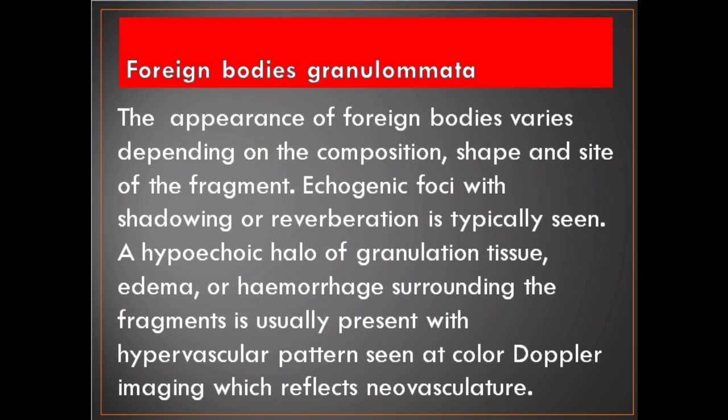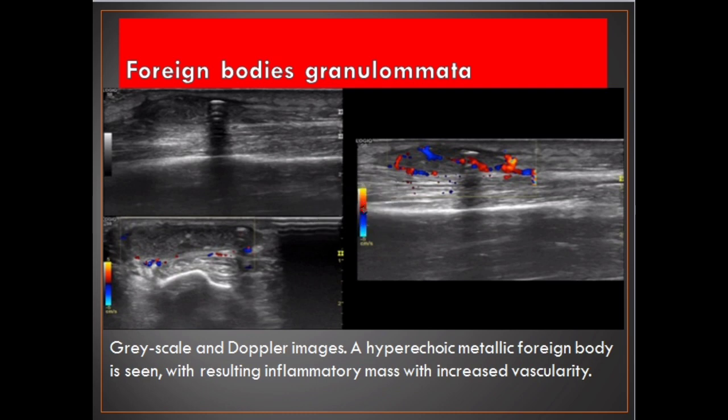The appearance of foreign bodies varies depending on the composition, shape, and site of the fragment. Echogenic foci with shadowing or reverberation is typically seen. A hypoechoic halo of granulation tissue, edema, or hemorrhage surrounding the fragments is usually present, with a hypervascular pattern seen at color Doppler imaging which reflects neovasculature. Grayscale and Doppler images show a hyperechoic metallic foreign body with a resulting inflammatory mass with increased vascularity.